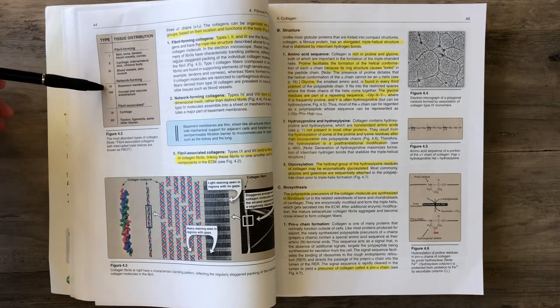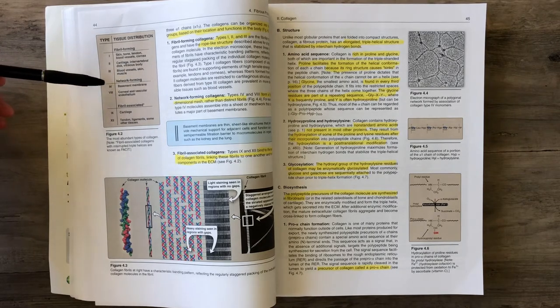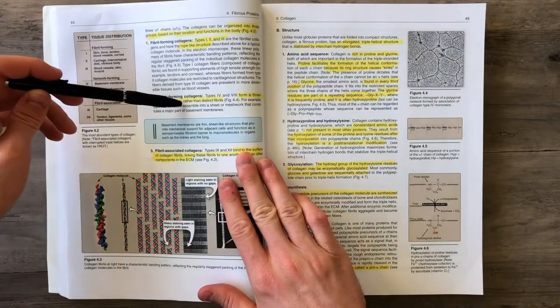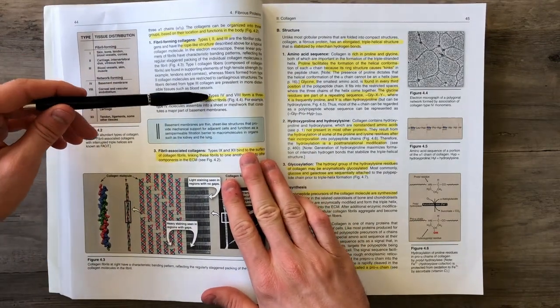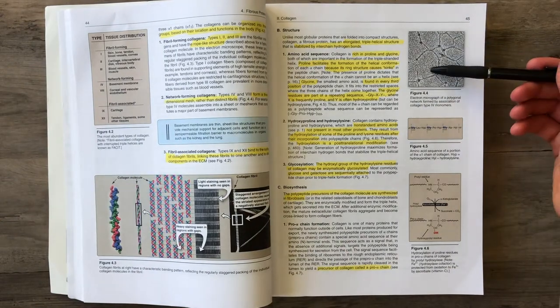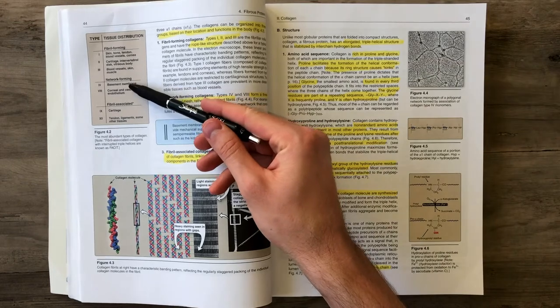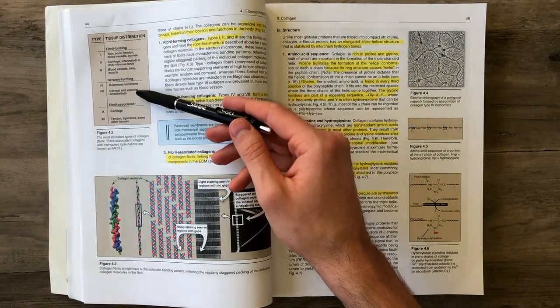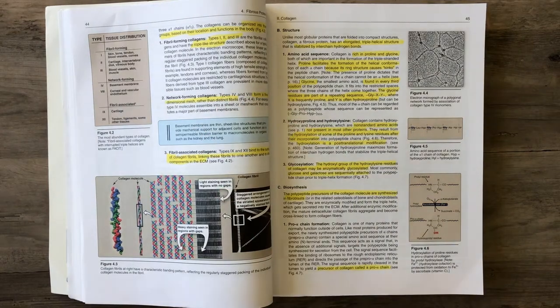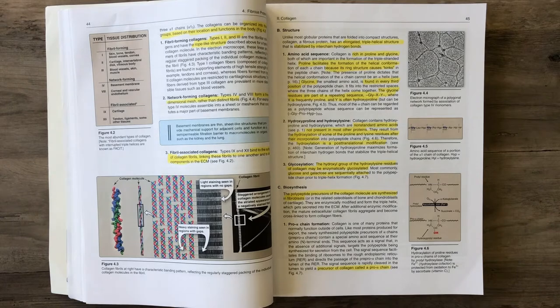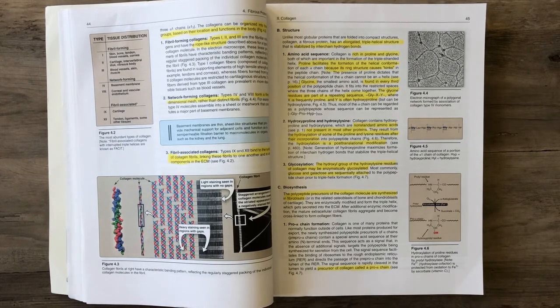The next types, which include types 4 and 8 collagens, create a three-dimensional mesh rather than distinct fibrils. This is more a meshwork and forms our basement membranes in various organs and in the corneal and vascular endothelium.